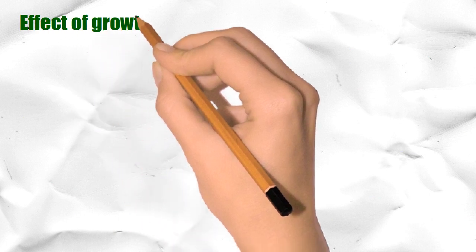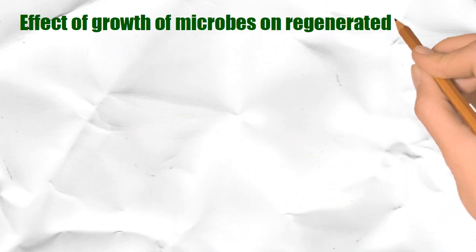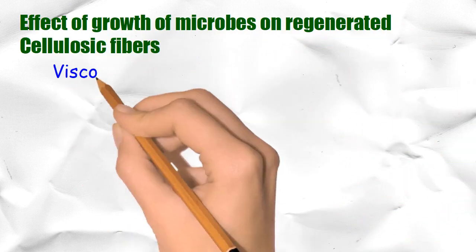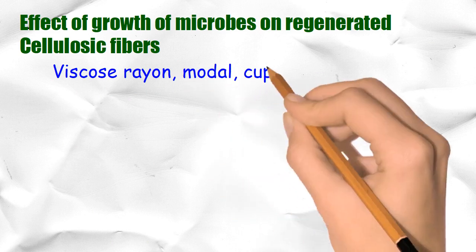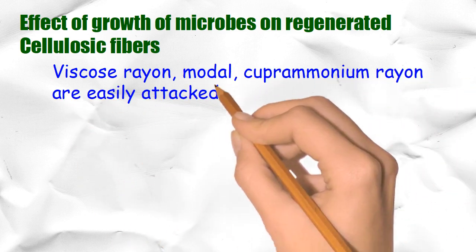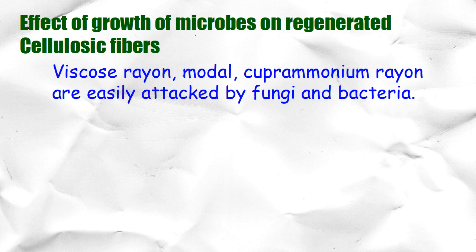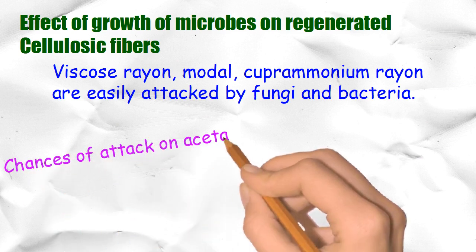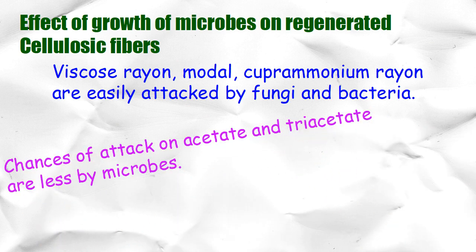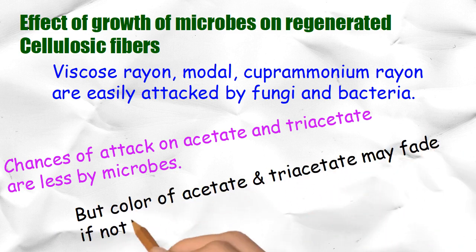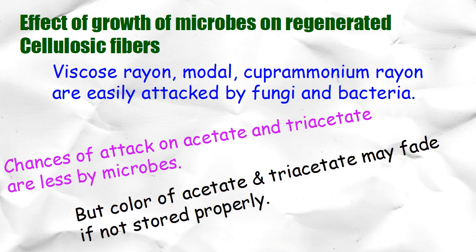Effective growth of microbes on regenerated cellulosic fibers: viscose rayon, modal, and cuprammonium rayon are easily attacked by fungi and bacteria. Chances of attack on acetate and triacetate are less, but the color of acetate and triacetate may fade if not stored properly.